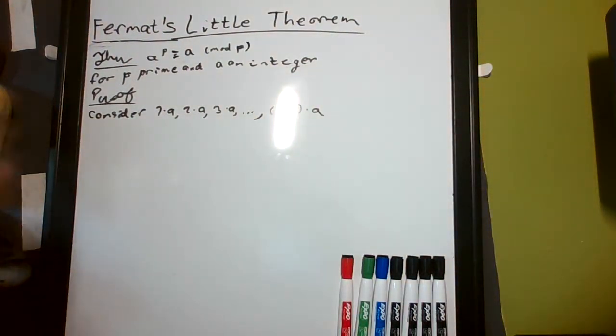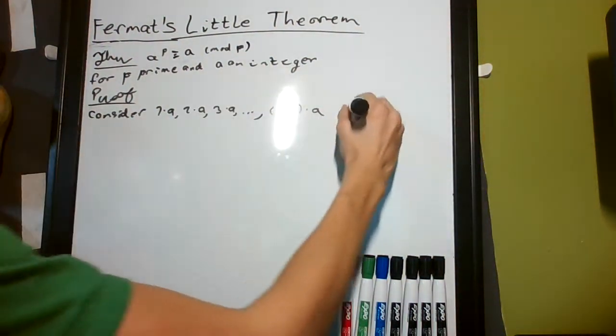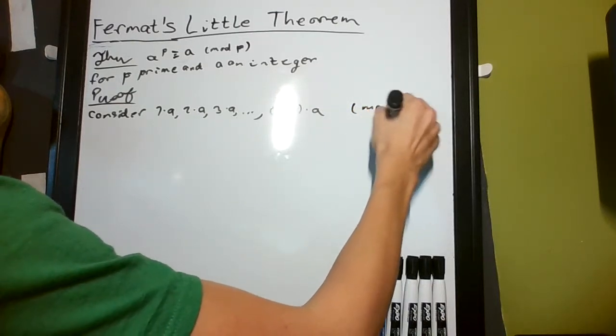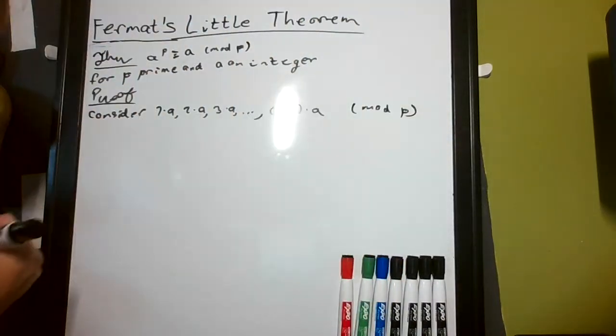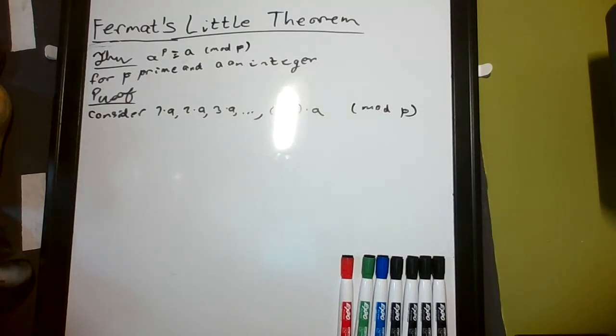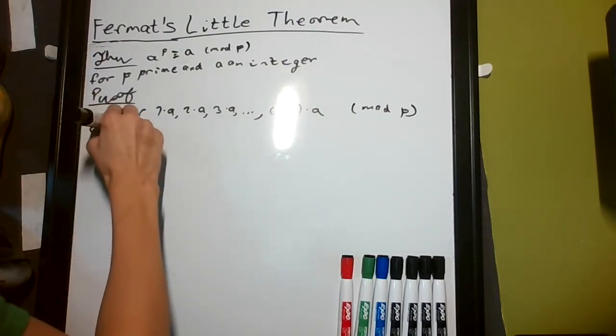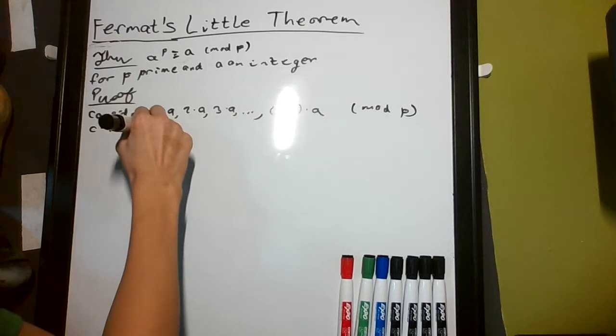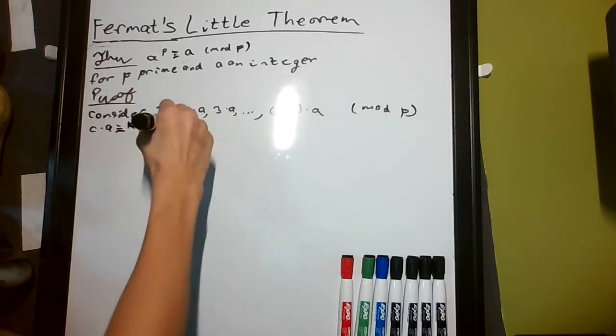Now, consider all of those mod p—so we're looking at them when reduced. Suppose that two of them are congruent: c times a is congruent to k times a mod p.